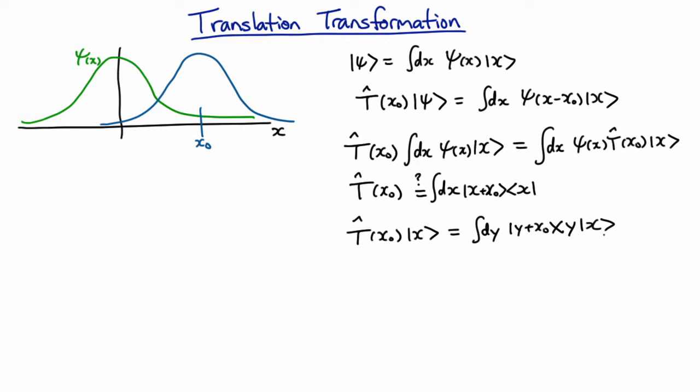What's this thing here? This thing here is a delta function. Because it's a continuous index, it's going to be a Dirac delta function. And that means I can actually perform the y integral and I'll end up with x plus x0. So that looks good. So that's actually what we're after.